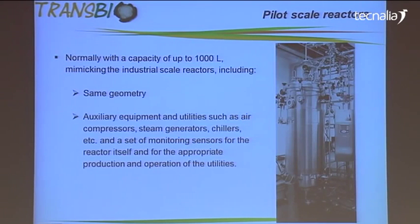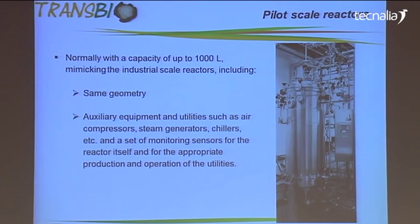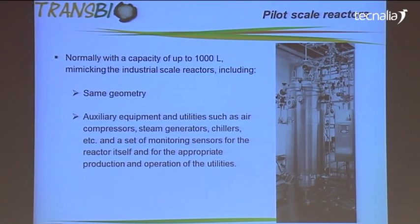After that, we transfer the technology again to pilot scale fermentation that goes up to 1,000 liters. At this point, we need to have the same kind of geometry — this is the fermenter that we have in our facilities, with a capacity of 250 liters that Bruno already showed you. We also need to have the same geometry that we will find in an industrial facility, and it is completely essential to have all the utilities that will also be present at an industrial facility, like compressed air, steam generators, chillers, and a set of sensors that will be mounted into the fermenter.